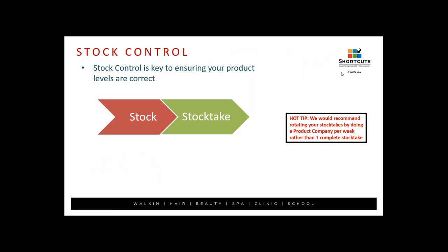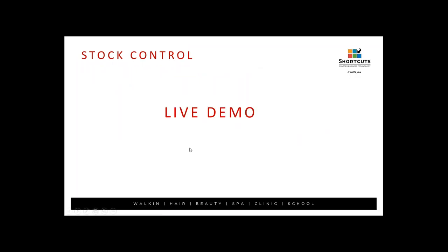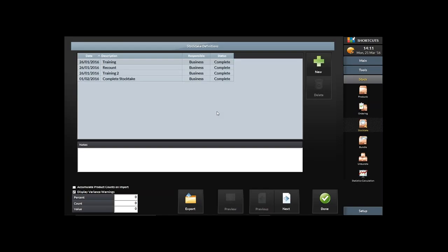Now let's look at stock control. Stock control is key to ensuring product levels are correct. Those current levels are working all the time, but without stock control how do we keep a tight rein on what stock we have? Stock control is done through Stock Take. We recommend rotating stock takes by looking at one product company per week, so every three to four weeks you're counting each product company — doing it in bite-sized chunks rather than one massive stock take.